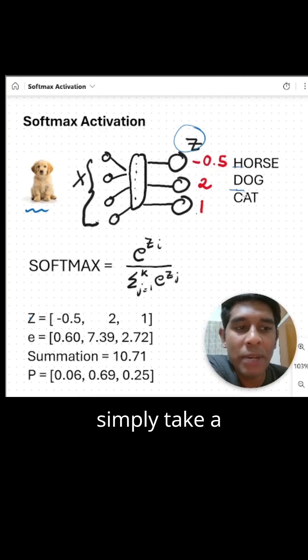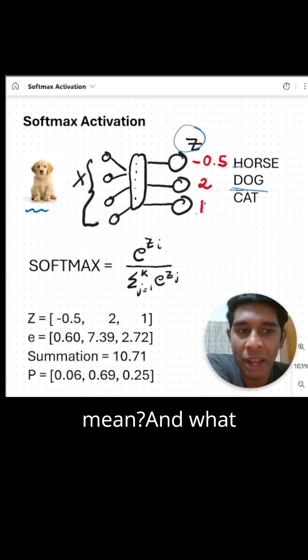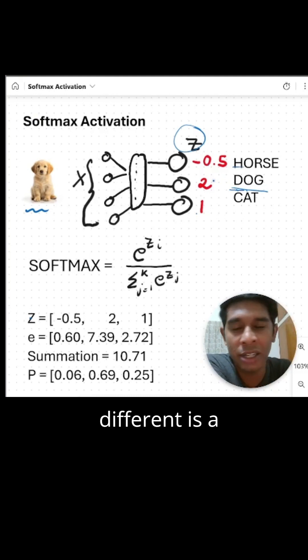Now to classify the animal, I can simply take a simple majority and say that this is an image of a dog. But this is not very interpretable, right? The final values—what does minus 0.5 mean? What does 2 mean? And what does 1 mean? And how different is a value of 2 from a value of minus 0.5?